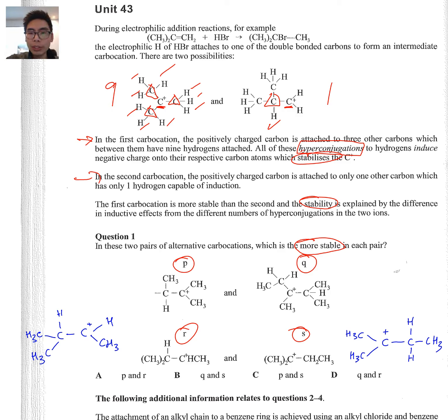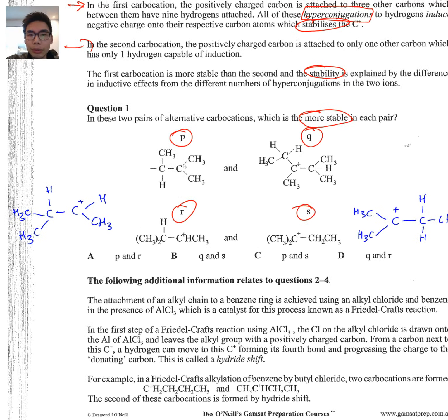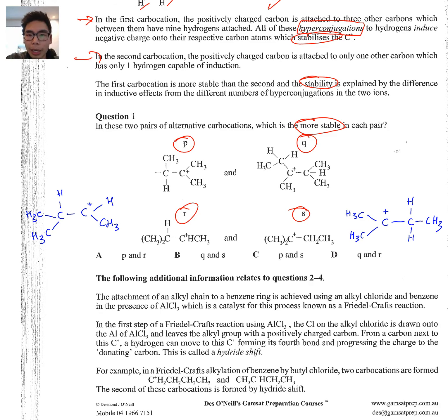So in question one, we can actually use these rules, we apply these rules, and we can therefore figure out which one is the most stable. If we go down to question one and you look at P, we have to follow the same rules. Looking at the carbon that's positively charged, in P you can see there are three neighboring carbons. And then on those carbons, we have one, two, three, four, five, six, seven. There are seven hydrogens directly attached to those neighboring carbons. So we can say that there are seven hyperconjugations to P.